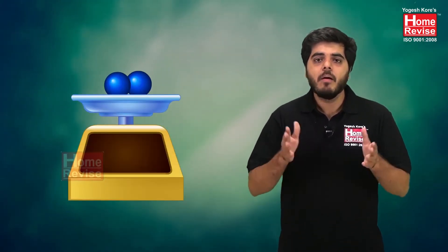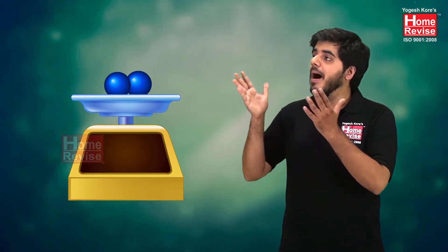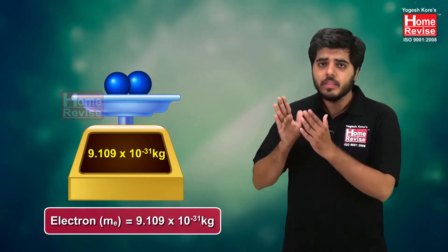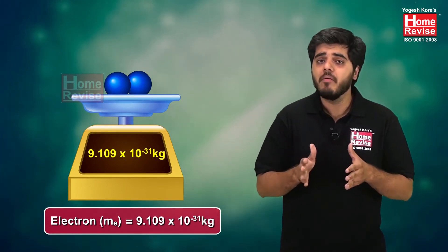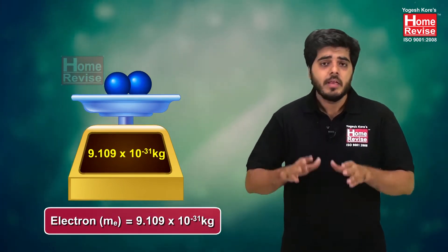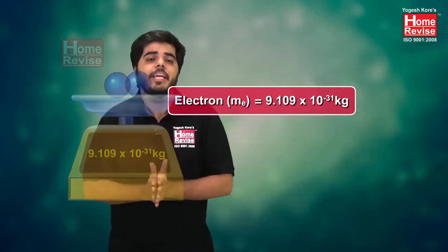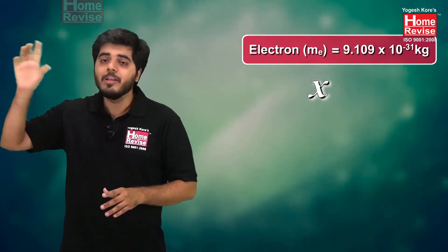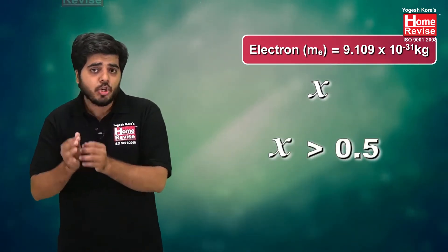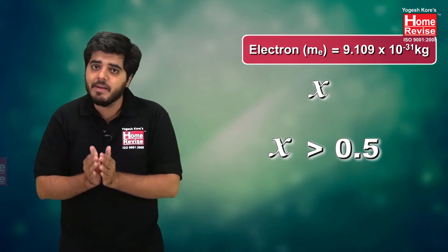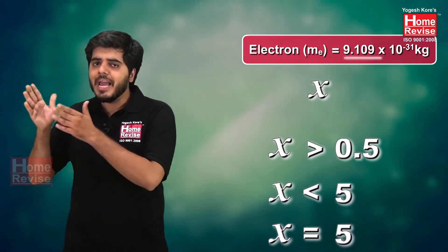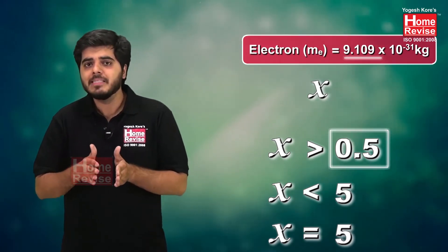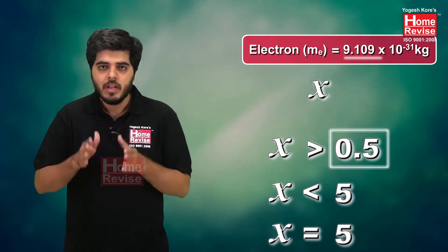For example, we take the mass of an electron. The mass of an electron is 9.1 × 10⁻³¹ kg. First, we check its range. Our x value is 9.1. x should be greater than 0.5 but less than or equal to 5. Is 9.1 less than or equal to 5? No.